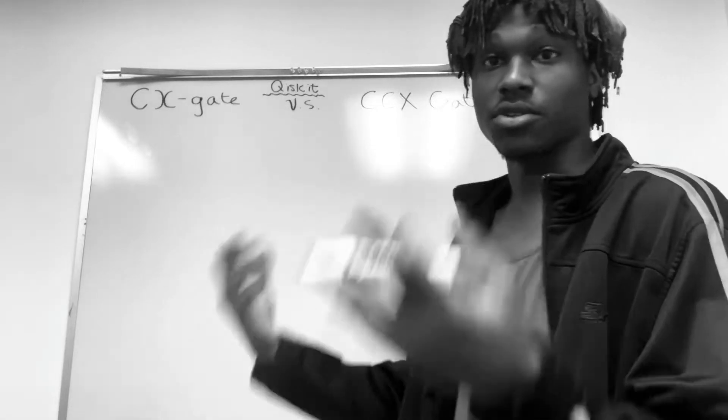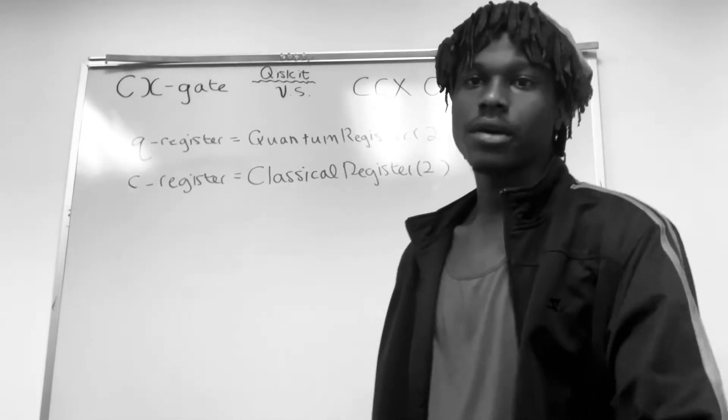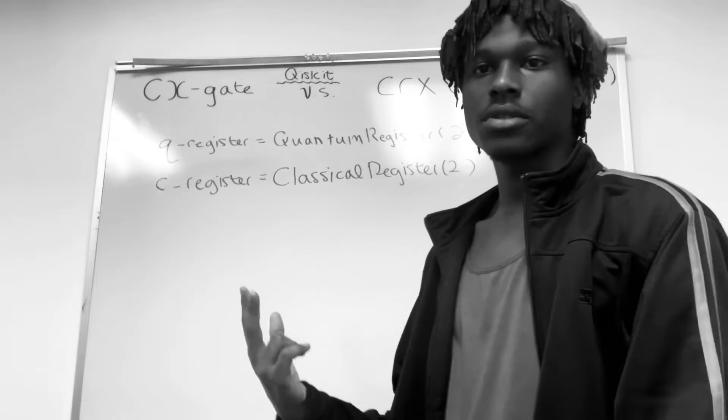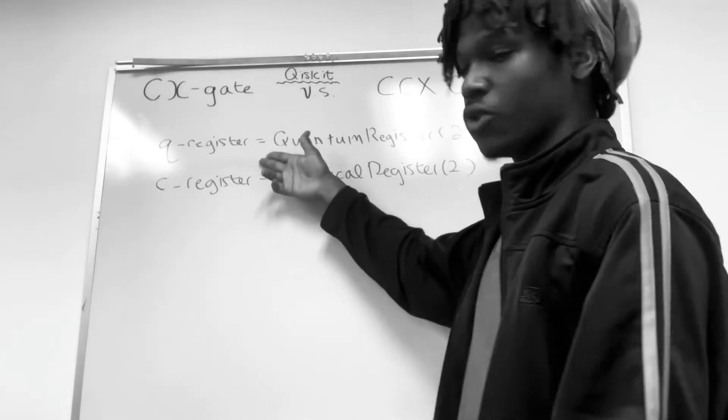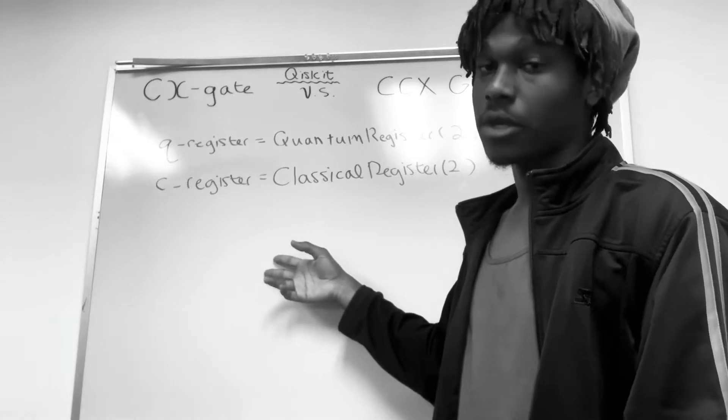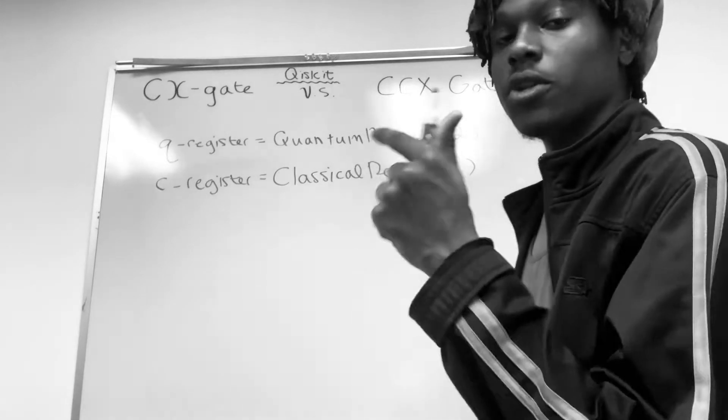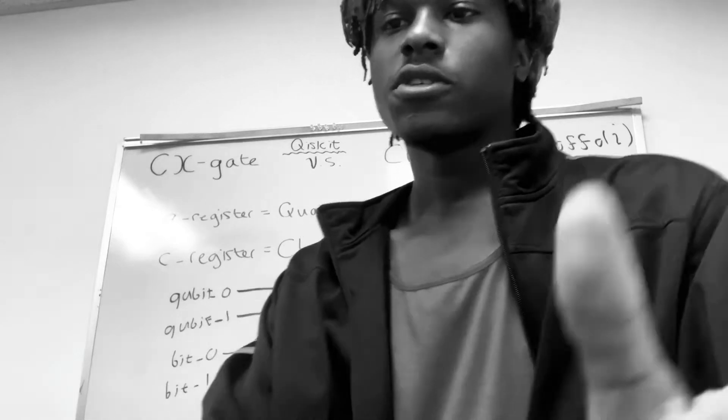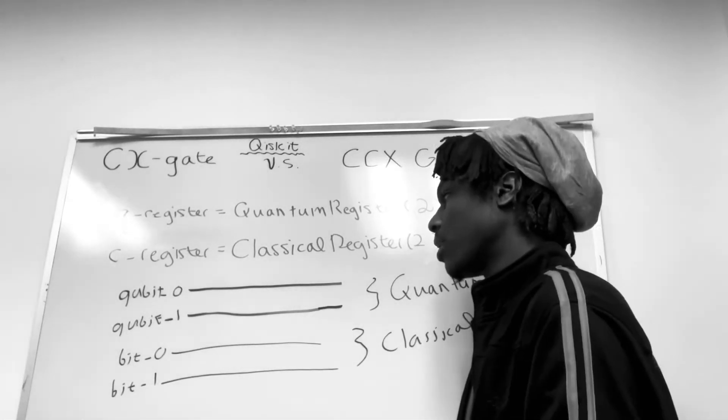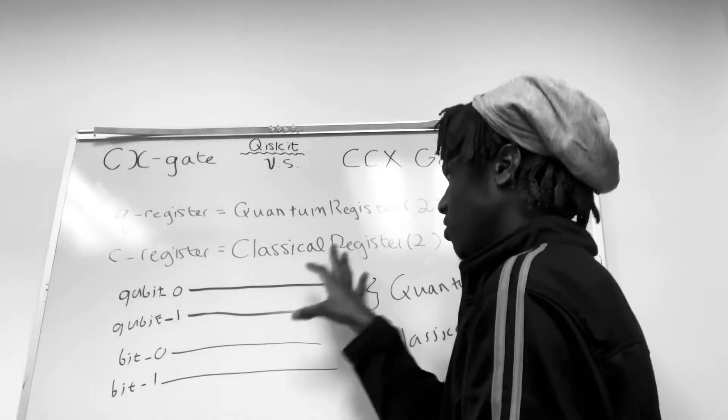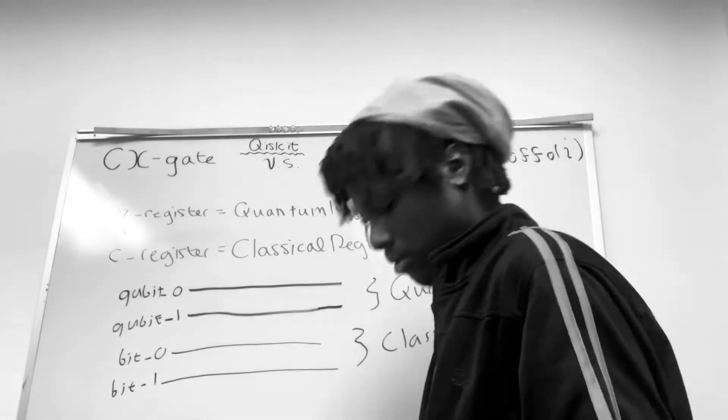So the first thing you want to do is initialize your circuit. What we've done so far is that we've created our two registers and we're going to create our circuit. What we have is two qubits right here and two classical bits. So far, what we've done is I've written out an empty circuit pretty much.